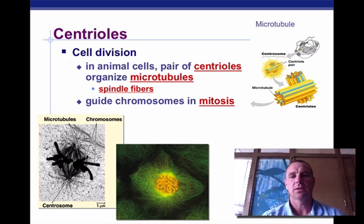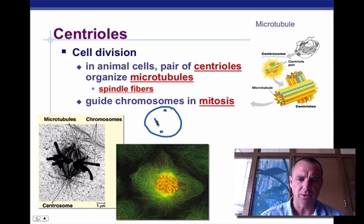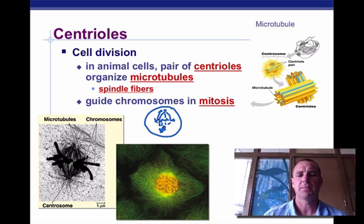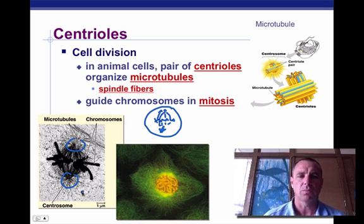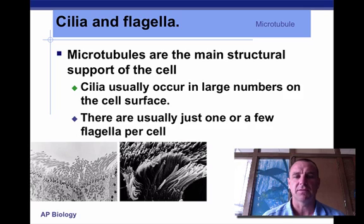Let's look at centrioles first. These are microtubules found in animal cells. If you remember from biology, there were little structures that formed at each end of the cell when the chromosomes lined up in the middle, and the spindle fibers came out and carried the chromosomes to each side — those little ends were the centrioles. So centrioles are involved in mitosis.